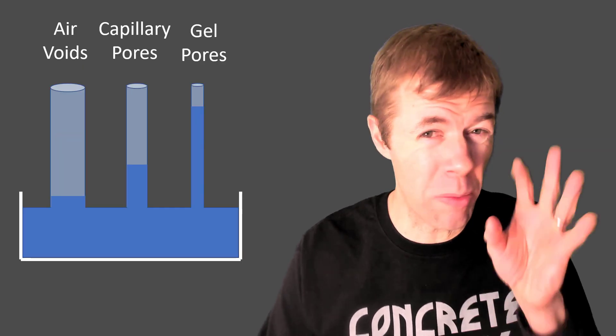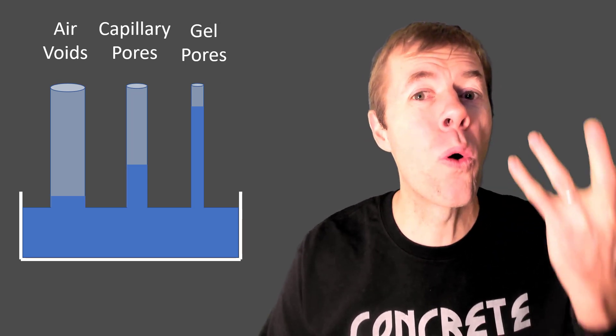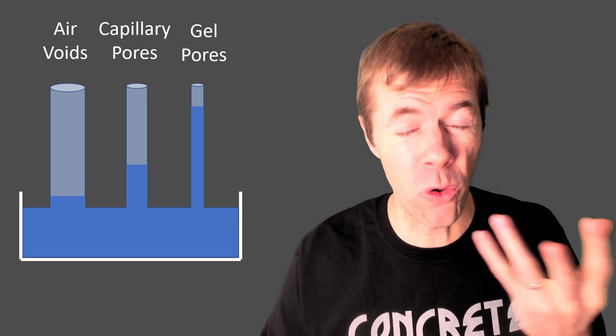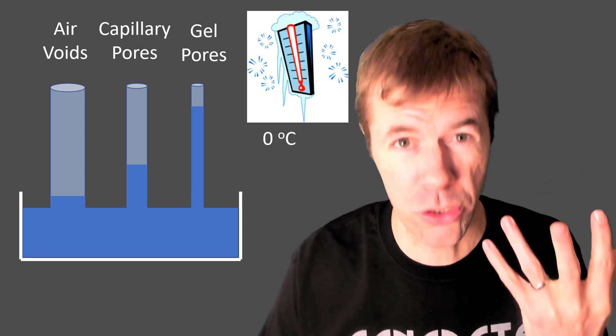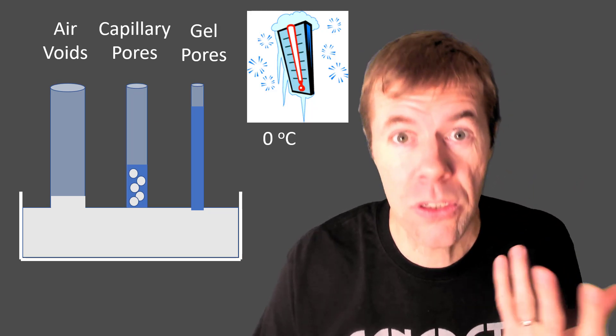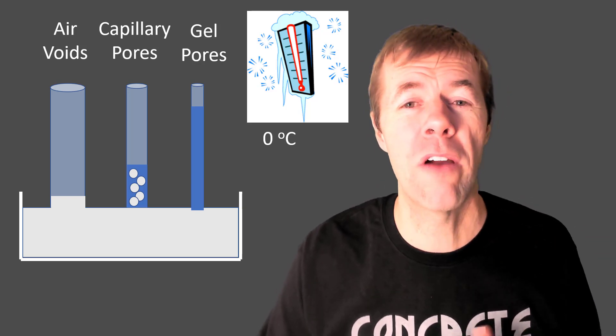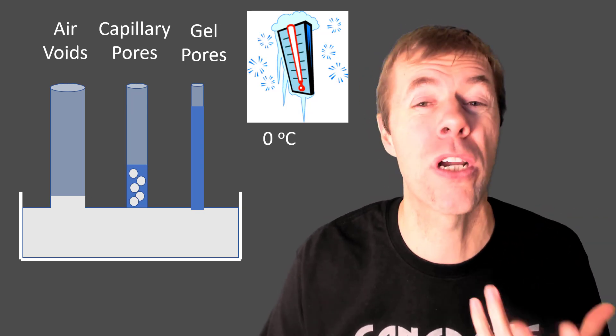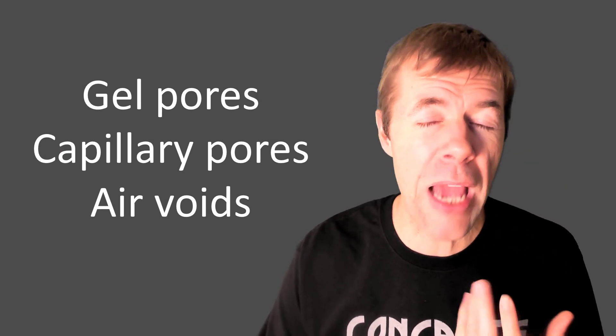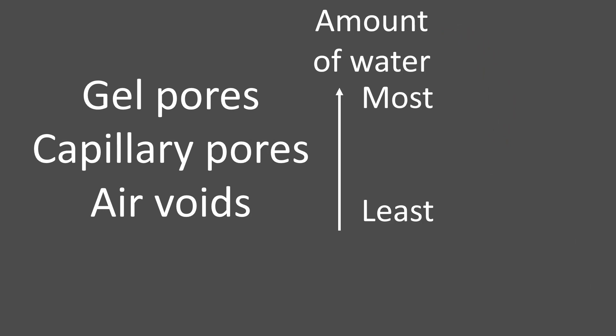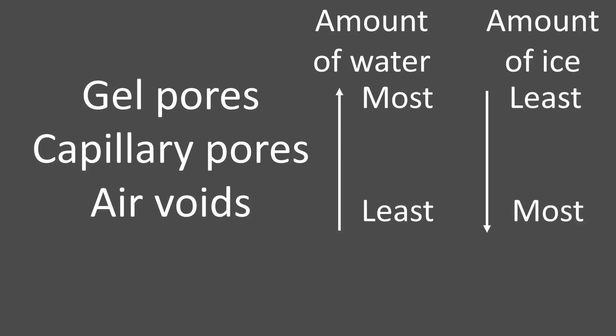So the smallest straws — like the gel pores — are going to be more full than the other pores. The capillary pores are going to be more full than the air voids. But what's going to happen once it starts to freeze? The smallest pores don't want to freeze because they've got higher tension on them. There's going to be a slushy type thing in the capillary pores — a few ice crystals but not a ton. And the air voids, the largest ones, are going to want to freeze. In summary: the smallest pores have the most water but are least likely to freeze; the largest voids have the least water but are most likely to freeze.